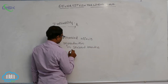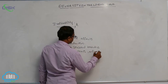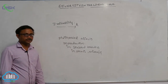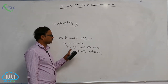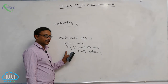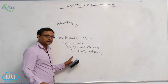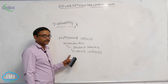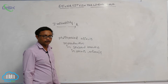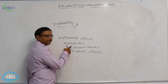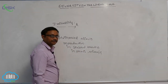Photoperiod effects reproduction in seasonal breeders, in both plants and animals. It means some plants produce flowers and fruits only at certain seasons. Animals can also reproduce depending on the season. So reproduction in seasonal breeders mainly depends upon that photoperiod.